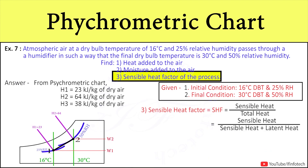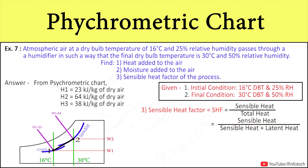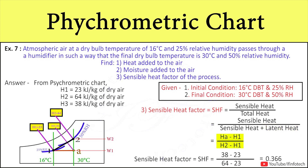The third thing we have to find out is the sensible heat factor. The sensible heat factor is the ratio of sensible heat to total heat, and total heat is the sum of sensible heat and latent heat. In order to calculate sensible heat and latent heat, we first need to calculate the enthalpies during process 1 to 2. The difference of enthalpies between point 1 and point A is sensible heat, and the difference of enthalpies between point 2 and point A is latent heat. Putting the values of H1, H2, and HA into the formula, we get the sensible heat factor as 0.366.